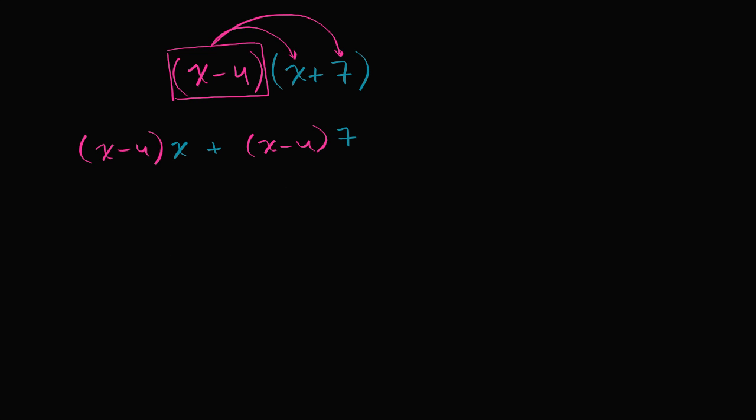Now, what is this going to be on the left-hand side? Well, the x times the x is going to be x squared, and then the x times, this is minus four, or x times the negative four is negative four x.